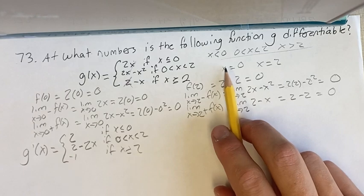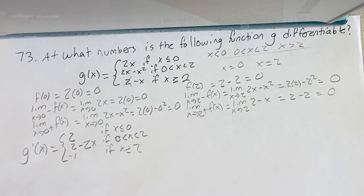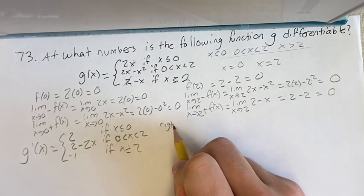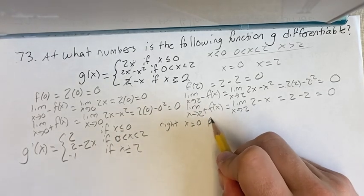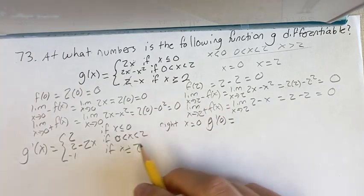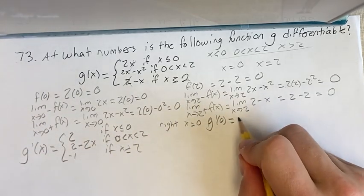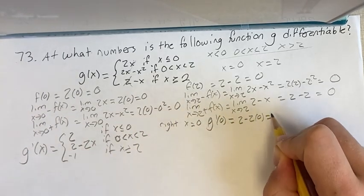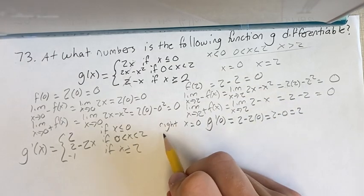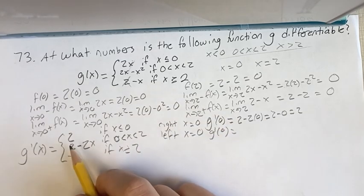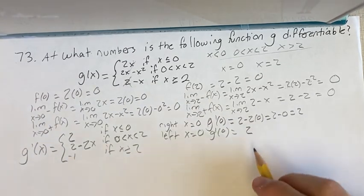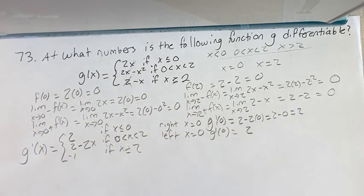We just have to check when x is 0 and x is 2. So when you're approaching from the right for x equals 0, the derivative equals 2 minus 2 times 0 equals 2 minus 0 equals 2. And from the left of x equals 0, we have g prime of 0 equals just 2. So the right and the left are equal. That means that it is differentiable.